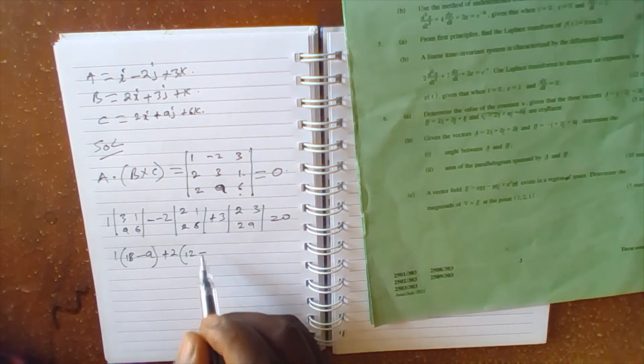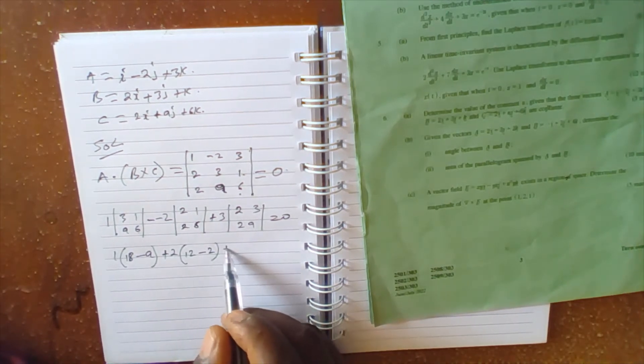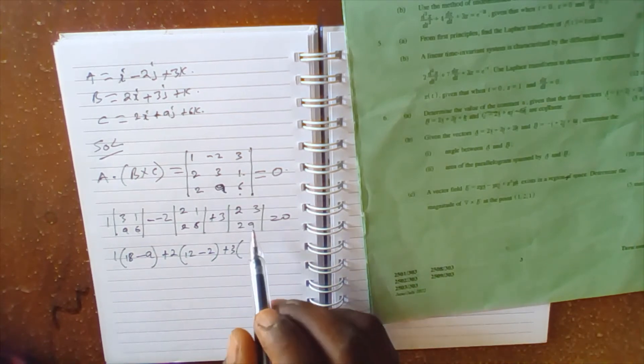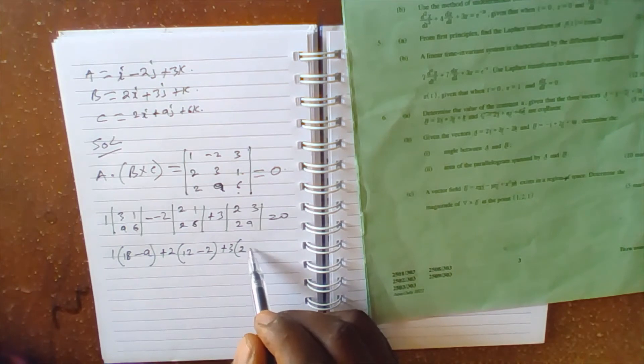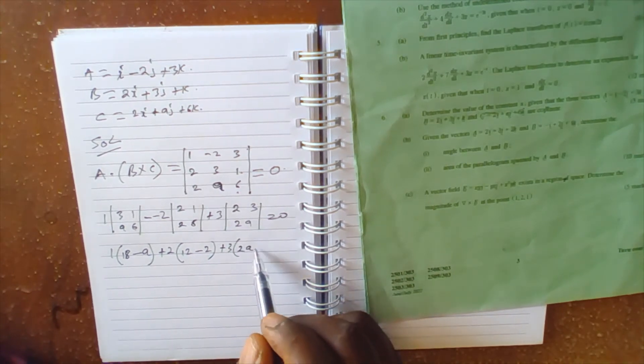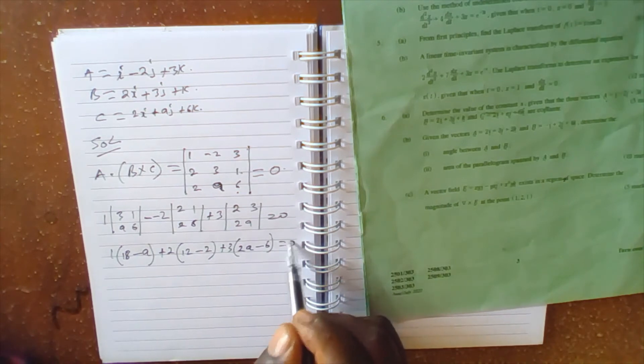Plus 2 times (12 minus 2 times 3 is 6), plus 3 times (a times 2 is 2a, minus 2 times 3 is 6). This equals to 0.